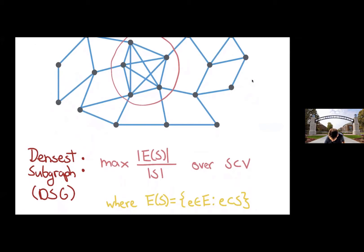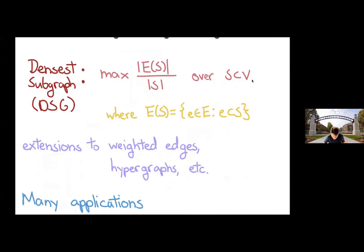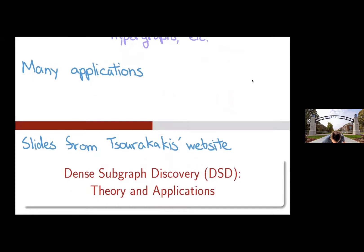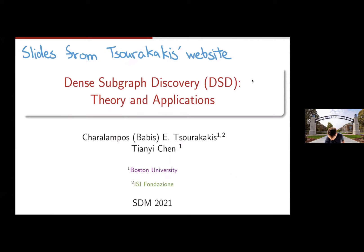Our goal is to identify the subset of vertices S that induces the densest subgraph. Of course, you can extend it to things like weighted edges and hypergraphs and all that. And besides being a very natural problem, this is also a very popular problem for many applications. I'm not the world's biggest application expert, but I stole some slides from Babes Surakakis, who does a lot of work in this area.